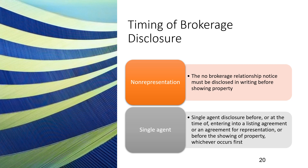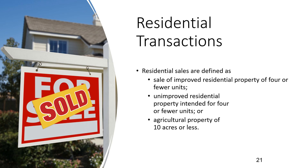Timing of broker disclosure: for non-representation, the no brokerage relationship notice must be disclosed in writing before showing a property. For single agent disclosure, it must occur before or at the time of entering into a listing agreement or an agreement for representation, or before showing of property, whichever occurs first. Residential sales are defined as the sale of improved residential property of four or fewer units, unimproved residential property intended for four or fewer units, or agricultural property of 10 acres or less.